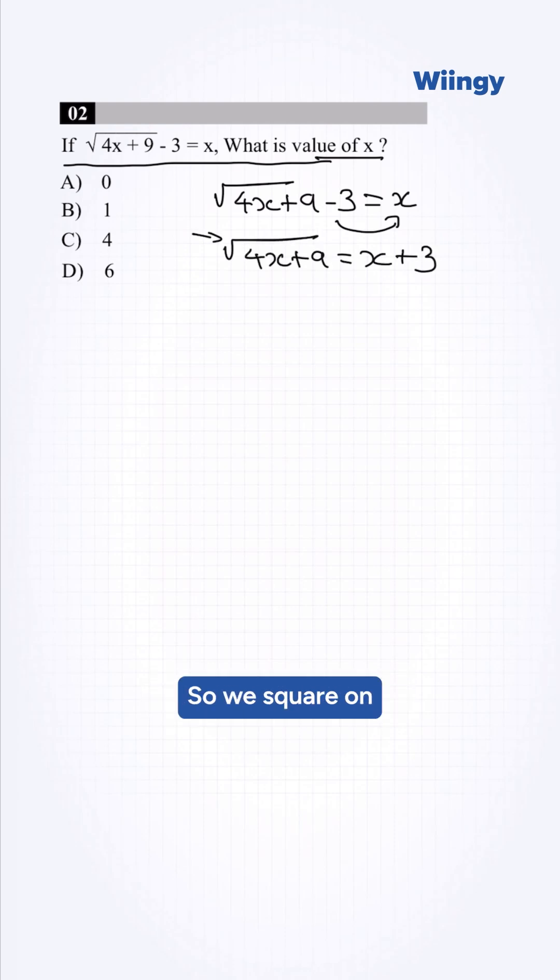Now we need to get rid of the square root, so we square both sides. This will become 4x + 9 = (x + 3)².